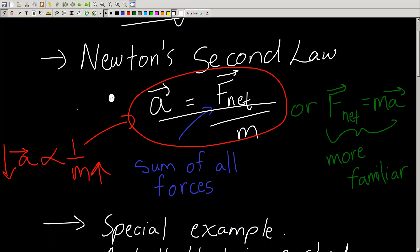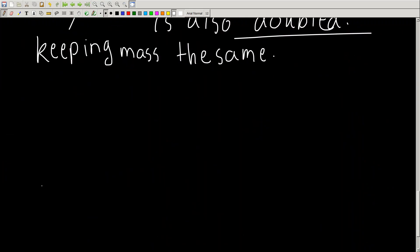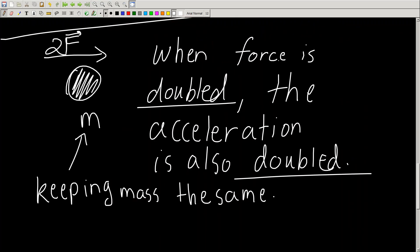That is also a consequence of the formula. So if you go to the formula, A is actually directly proportional to F, F net in this case. So if the force increases, guess what? So will the acceleration by that same multiple. So if you have a force that's doubled, the acceleration is doubled.